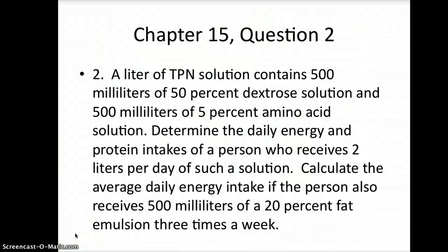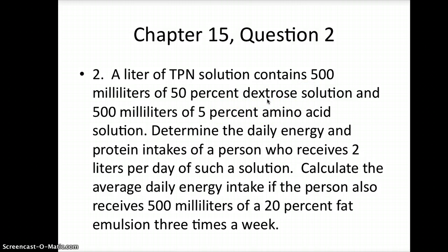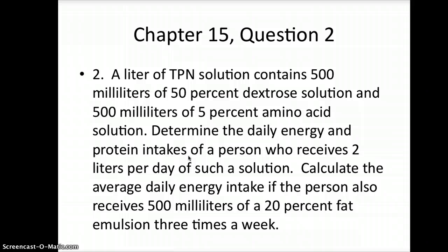Let's move on to question 2 for chapter 15. The question reads: A liter of TPN solution contains 500 milliliters of a 50% dextrose solution and 500 milliliters of a 5% amino acid solution. Determine the daily energy and protein intakes of a person who receives 2 liters per day of such a solution. Calculate the average daily energy intake if the person also receives 500 milliliters of a 20% fat emulsion 3 times a week.